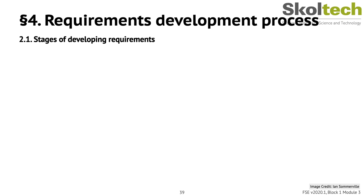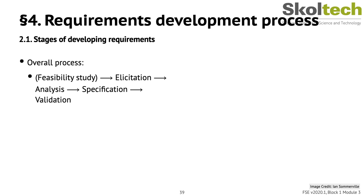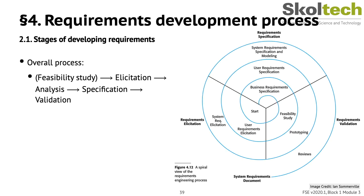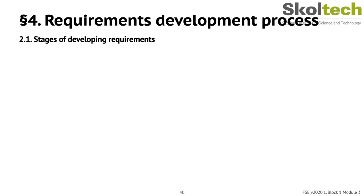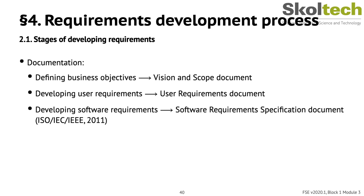Requirements engineering processes include several high-level activities: assessing if the system is useful to the business (feasibility study), discovering requirements (elicitation and analysis), converting them into a standard form (specification), and checking that requirements define what the customer wants (validation). One may use a spiral process model to develop requirements iteratively. The output typically includes a business requirements document, a user requirements document, and a software requirements specification.